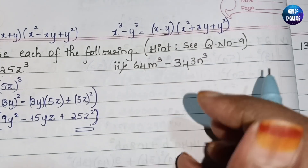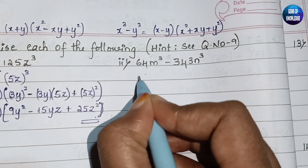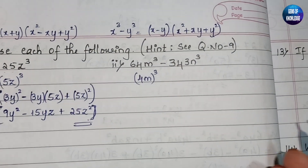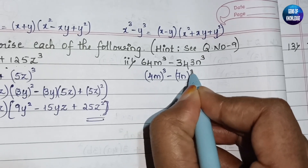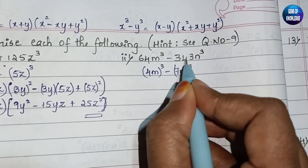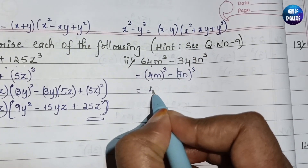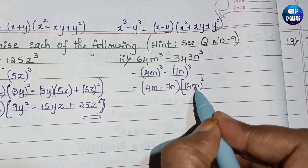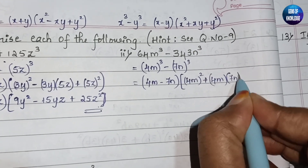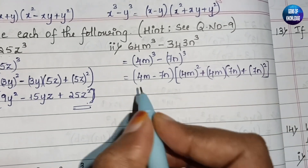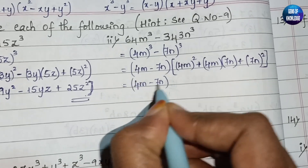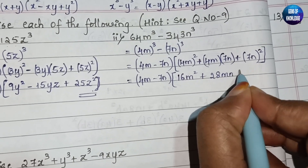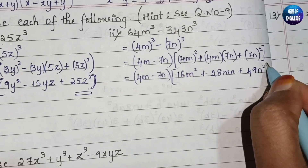The second part is 64m³ - 343n³. This can be written as (4m)³ - (7n)³, since 4×4×4=64 and 7×7×7=343. Applying the x³-y³ formula with x=4m and y=7n, we get (4m-7n)(16m²+28mn+49n²).